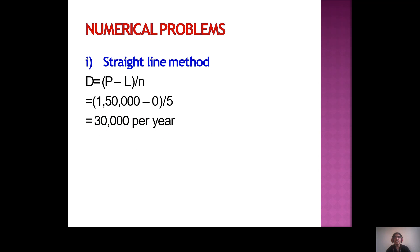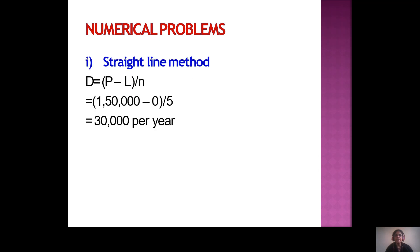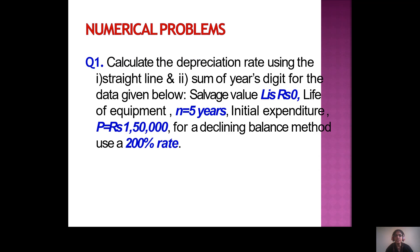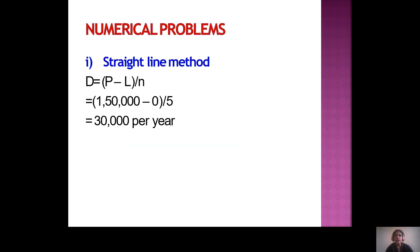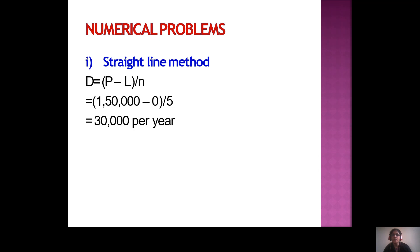For straight line method, the formula is D = (P − L) / N. P is 1,50,000, salvage value L = 0, N = 5 years. Therefore D = (1,50,000 − 0) / 5 = 30,000 per year. Under the straight line method, annual depreciation is 30,000 per year.